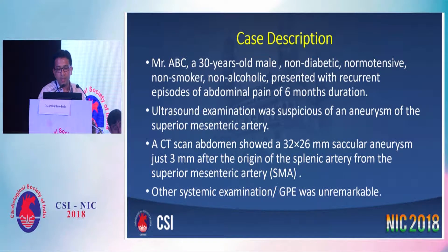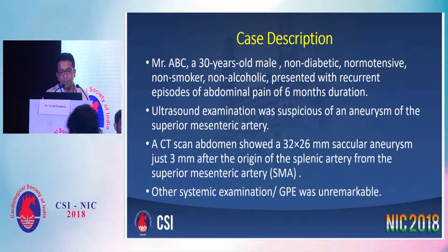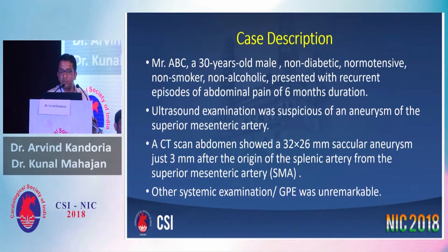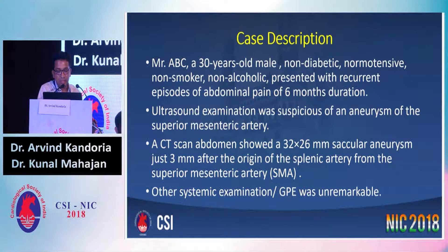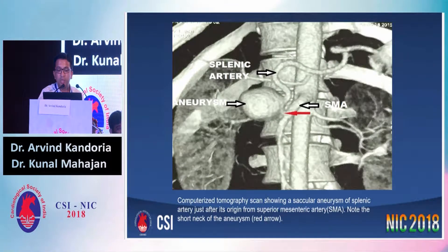We had a 30-year-old male with no significant past history who presented with recurrent episodes of abdominal pain of six-month duration. He had an ultrasound done from outside which revealed a suspicious aneurysm of the superior mesenteric artery, which was confirmed on his CT, but the aneurysm was not of the SMA. It was, in fact, of the splenic artery, which was anomalously arising from the superior mesenteric artery.